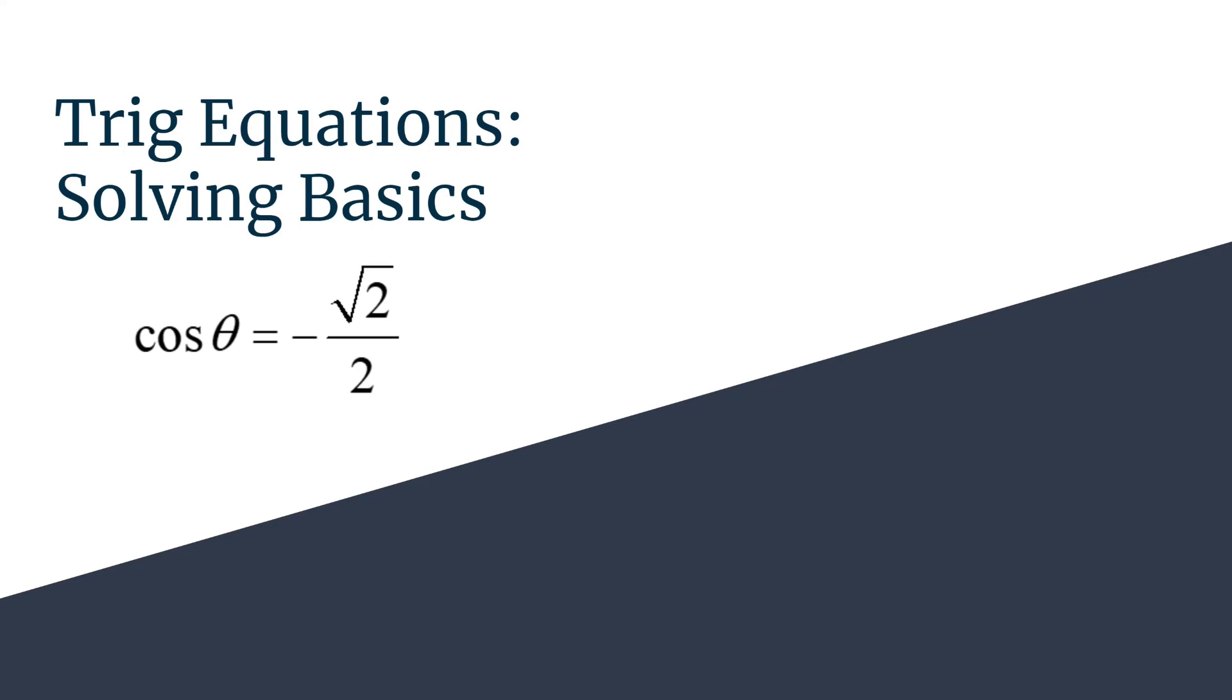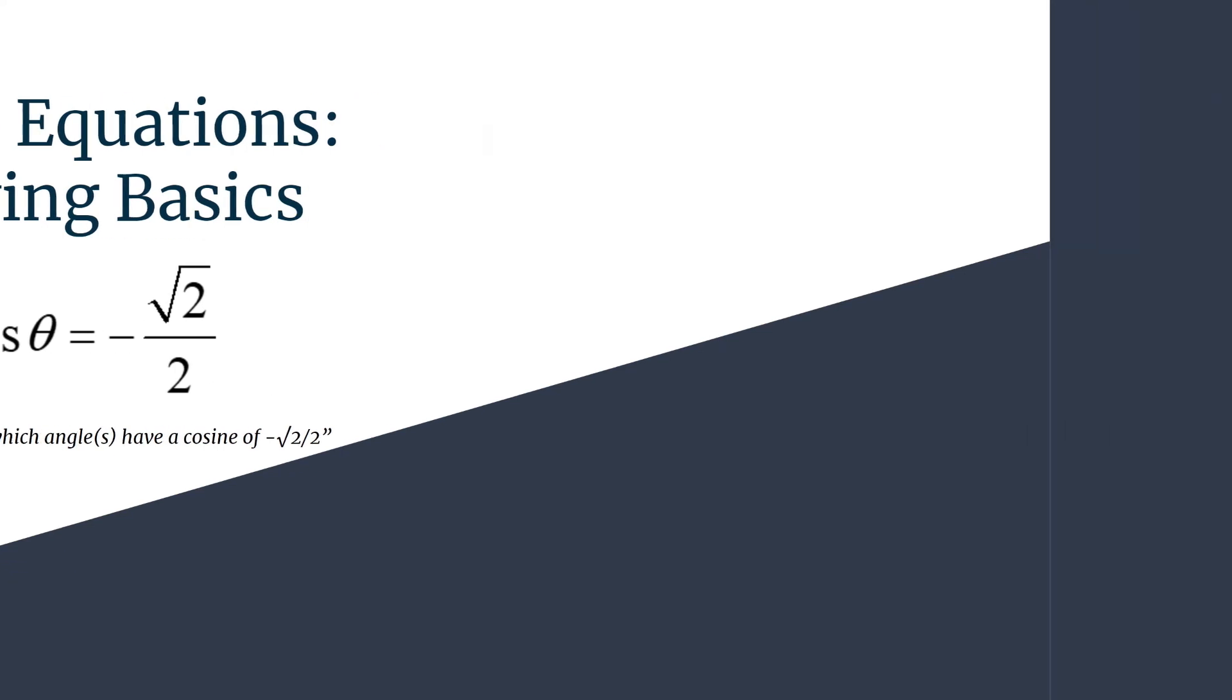Now, I like to have a plan of attack when solving, and for something that is in this format, I like to think which angle or angles have a cosine of negative square root 2 over 2. So as we work through this, you may find that there are a lot of similarities to actually finding or solving an exact value. We're just working in the other direction.